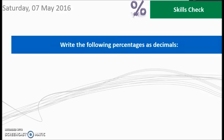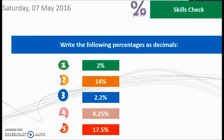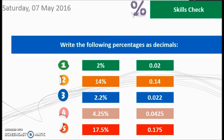First things first, let's have a look at a skills check. So can you turn all of these percentages into the equivalent decimals? Pause the video, have a go at this and then come back. Okay, hopefully you've had a go at that and the answers to that problem were on the right-hand side there. If you want to know the method, you just divide by 100. So to turn a percentage into a decimal, it's just dividing by 100.